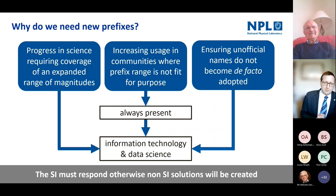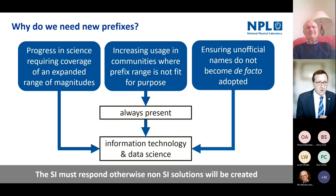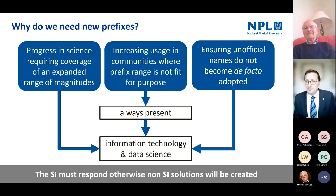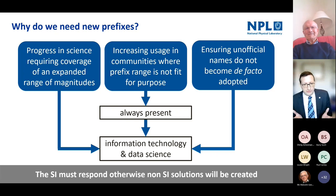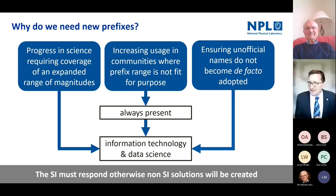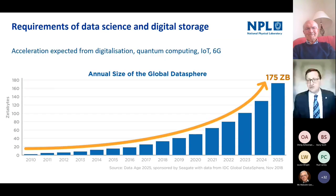Why do we need new prefixes at any time? There are three main drivers: first, progress in science requiring an expanded range of magnitude coverage; second, increasing usage in communities where the prefix range is not fit for purpose; and third, ensuring that unofficial names do not become adopted de facto. The SI must respond, otherwise non-SI solutions will be created. The first and third drivers were particularly present in information technology and data science.